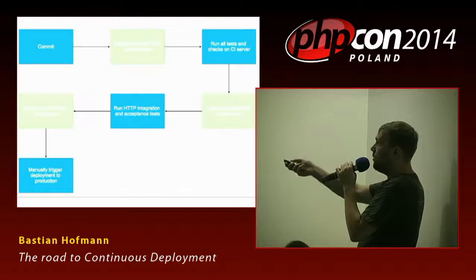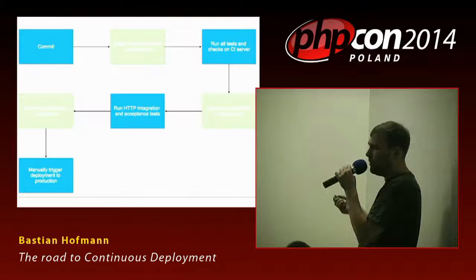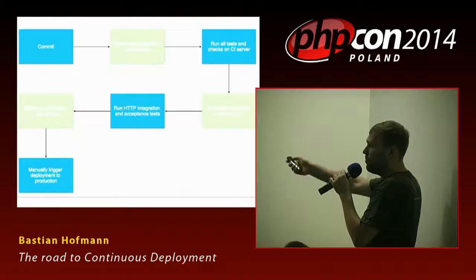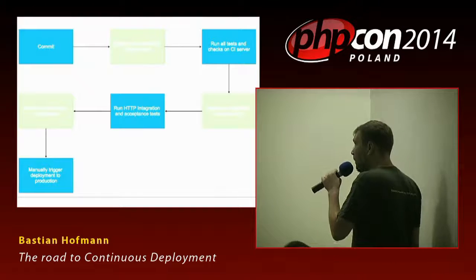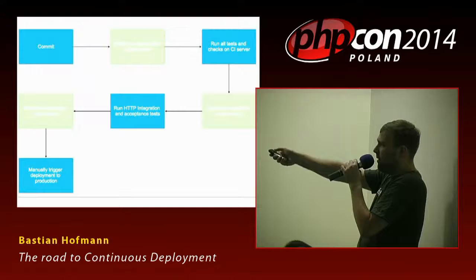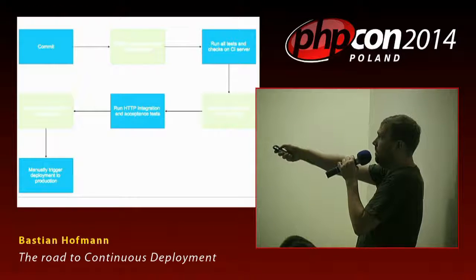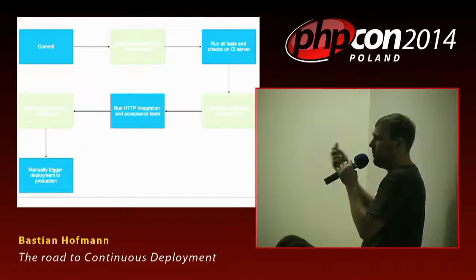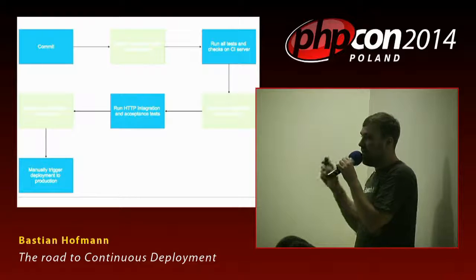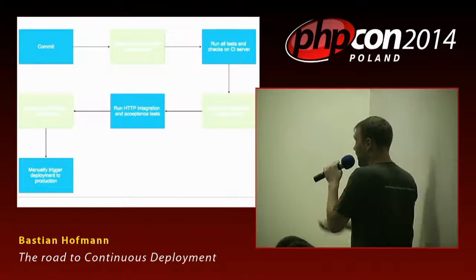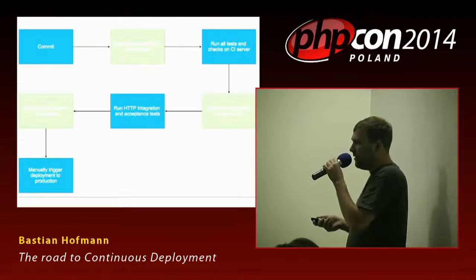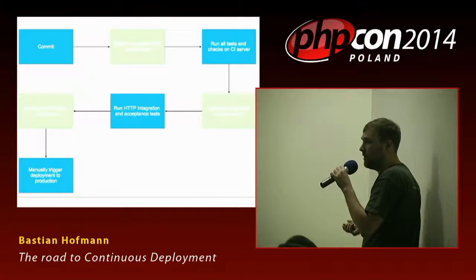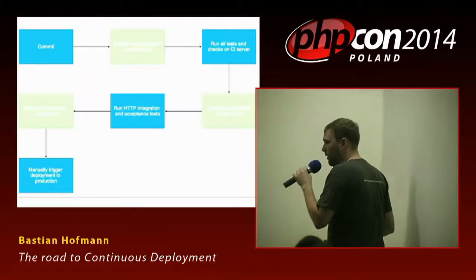If all those tests work, you deploy to a near-production system, and then maybe have a manual trigger to deploy to actual production. Of course, if this whole pipeline takes four hours to run, the purpose of continuous deployment is somewhat defeated, so depending on how long tests take, you may have to adjust. You should also still be able to deploy directly to production without going through the whole pipeline in case of an emergency where your platform is not working.